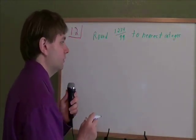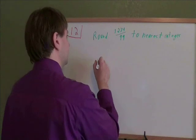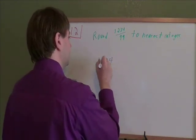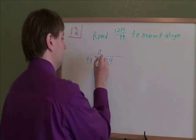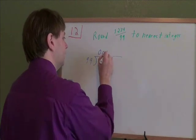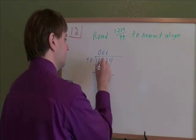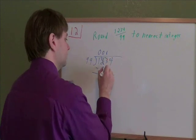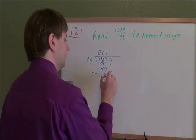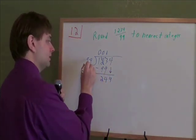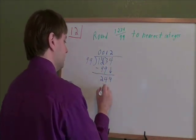Round 1,234 over 99 to the nearest integer. Well, the most straightforward way to do this is to just start the long division. 1,234 divided by 99. 99 doesn't fit into 1 or into 12, but it does fit into 123. It will fit in one time. Then how many times does 99 go into 244? Turns out it goes in twice.